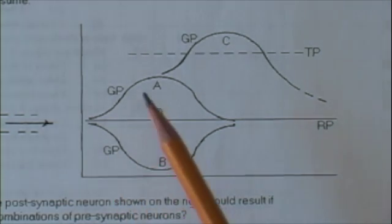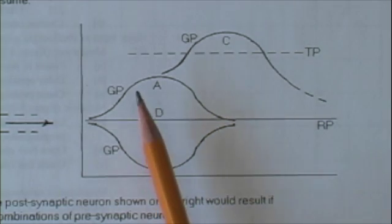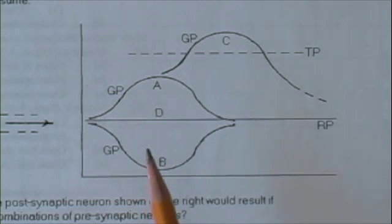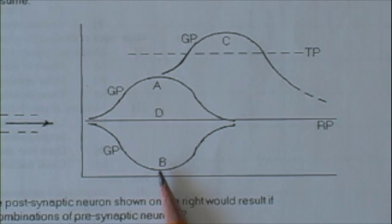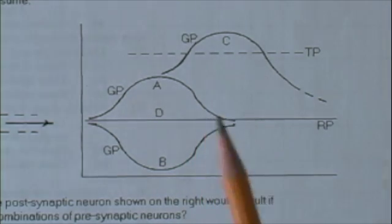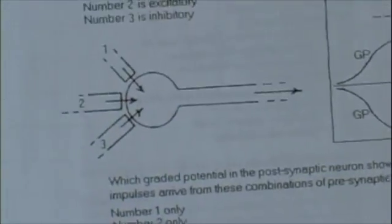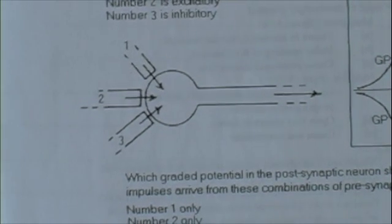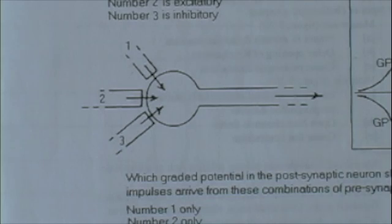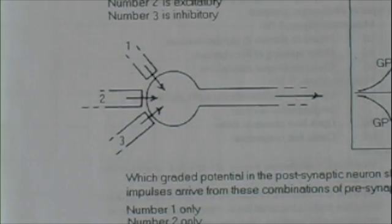What if the nerve impulse arrives along all three of the presynaptic neurons? Two of them try to depolarize the graded potential, one of them tries to hyperpolarize it, and the end result would be this, it would not fire. This is a very simple view, using three presynaptic and one postsynaptic neuron. In reality, a postsynaptic neuron may have hundreds of presynaptic neurons, and you can get an idea how complicated the processing of information in the nervous system may be.